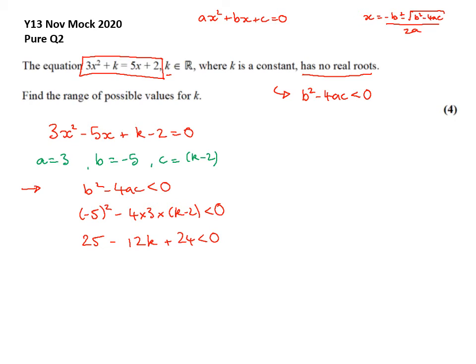Add 12K. So on this side, I've got 49. Add the 12K. I get 49 over 12 is less than K.